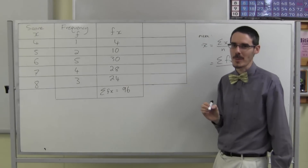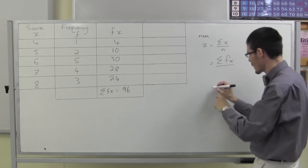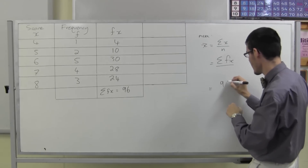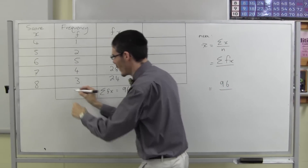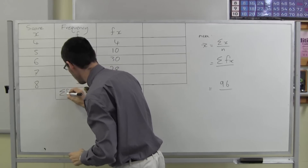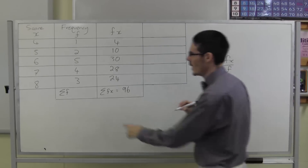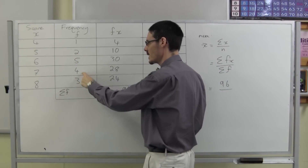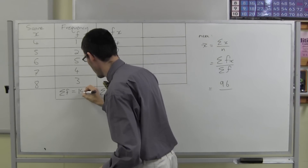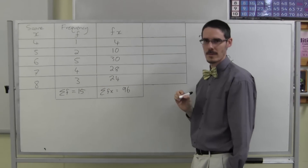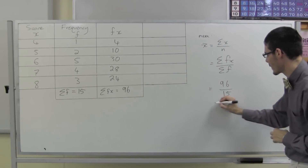I'm going to need my calculator in a moment anyway. How many scores are there? The sum of the frequencies: 1 plus 2 plus 5 plus 4 plus 3. That's 3, 8, 12, 15. So to get my mean, I have to compute 96 divided by 15.